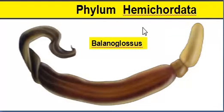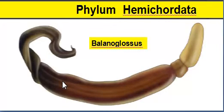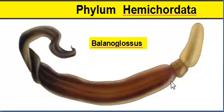Animals of Hemichordata show both invertebrate and chordate characters. They do not have a notochord or backbone — this is the invertebrate character. They have gill slits, which are openings of the gills — that is the chordate character. Hemichordates are worm-like animals with an unsegmented body. They live inside tubes and are marine organisms.